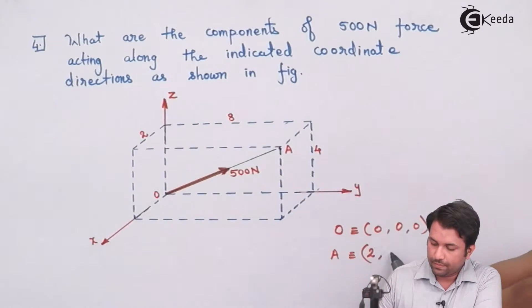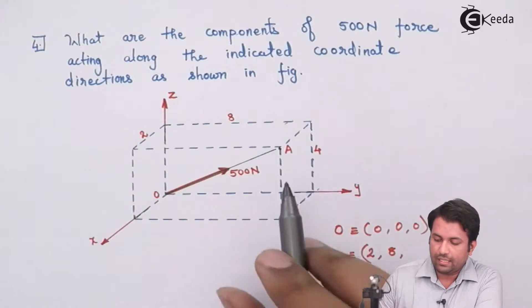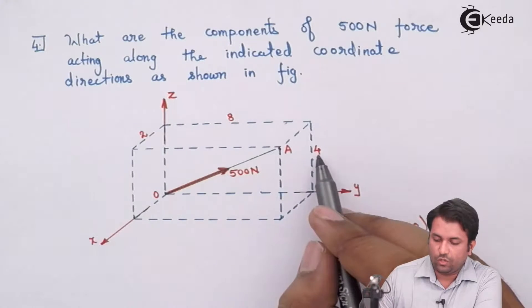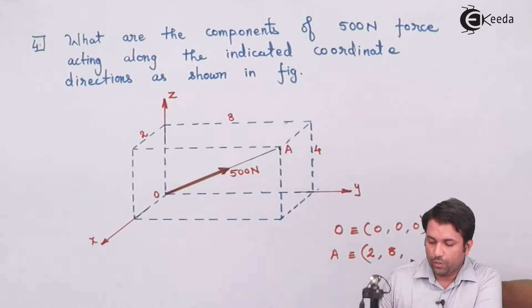This is my Y axis, so the distance along this line happens to be 8 units and the distance along Z axis is given to me over here as 4 units.